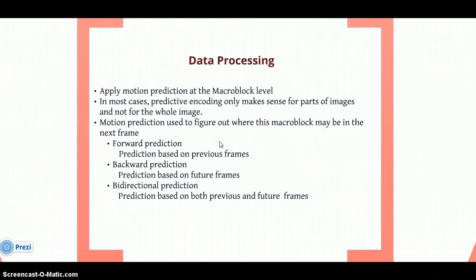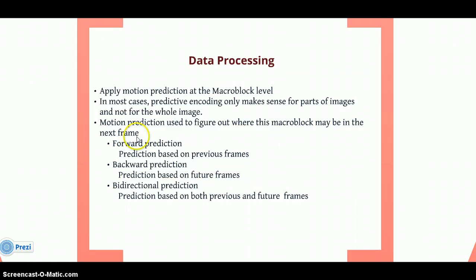In data processing, we apply motion prediction at the macro block level. We are dividing into frames and applying macro blocks within those frames. In general cases, prediction encoding is only applied to part of the image, not the whole image. Motion prediction is used to figure out where a macro block may be in the next frame.